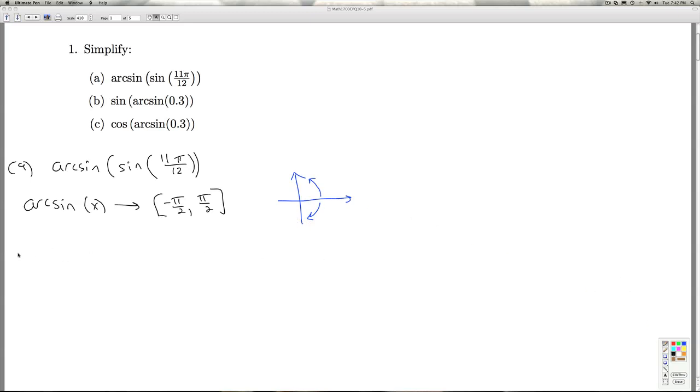So, I can associate the arcsine of the sine of 11π over 12. I'm going to associate that with some angle theta. And what do I know about theta? I know that the sine of theta has to be the sine of 11π over 12.